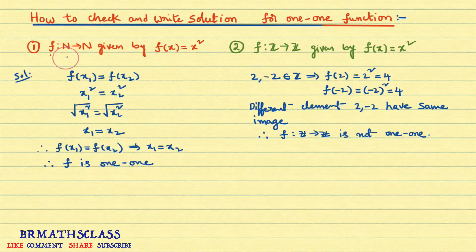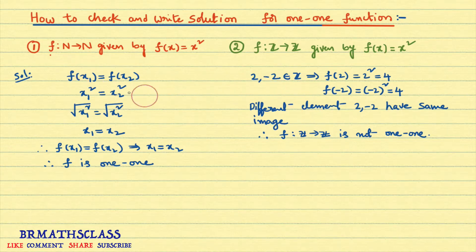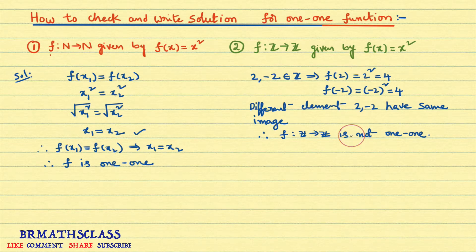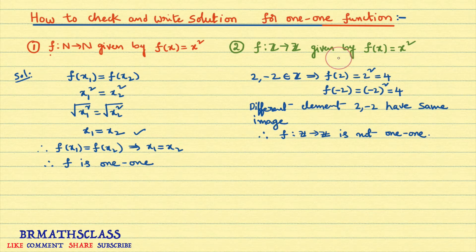Notice that only the domain and co-domain are different between the two problems — the function f(x) = x² is the same in both. In the first problem (natural numbers), the function is one-one, and we must follow the standard procedure: assume f(x₁) = f(x₂), simplify, and get x₁ = x₂. When the function is not one-one, give a counterexample showing two different elements with the same image. When the function is one-one, you must follow this standard procedure — you cannot give a counterexample.